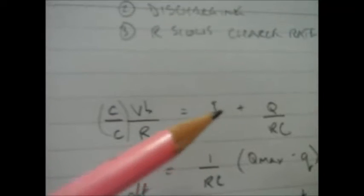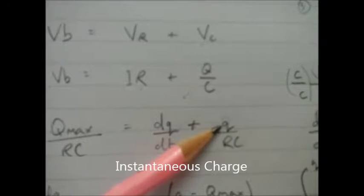Current, this current here, that can be defined as the change in charge over the change in time. And the last bit was the instantaneous current in the capacitor divided by RC. So we've now reached this format for our equation.